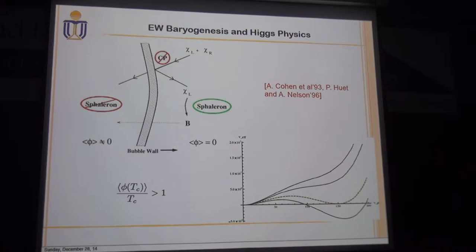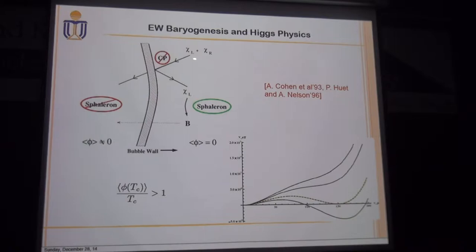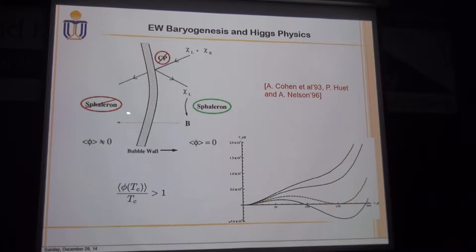If the interaction between the bubble and the particles in the thermal plasma is CP violating, then the scattering between the bubble and these particles can lead to a non-zero net number of left-chiral fermions in the thermal plasma, which can be further converted into a baryon number asymmetry via the electroweak sphaleron process. If the electroweak phase transition is strongly first order, the generated baryon asymmetry can be frozen until today. This is the basic picture of electroweak baryogenesis.